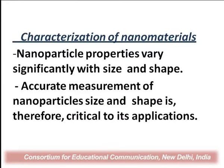In the characterization of nanomaterials, we are basically finding properties that vary significantly with size and shape. As discussed in previous lectures, the size and shape of nanomaterials changes as they are constructed. When preparing nanoparticles of size 10⁻⁹, the surface-to-volume ratio is at the nanoscale, so the property totally changes.